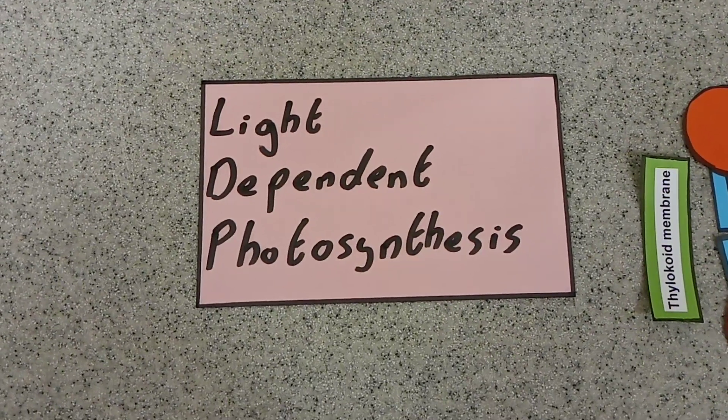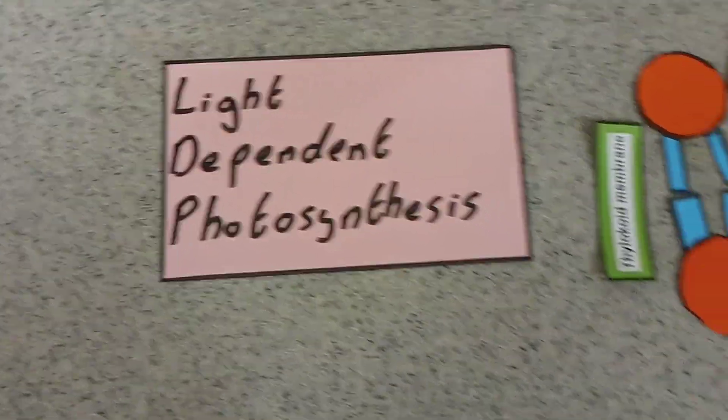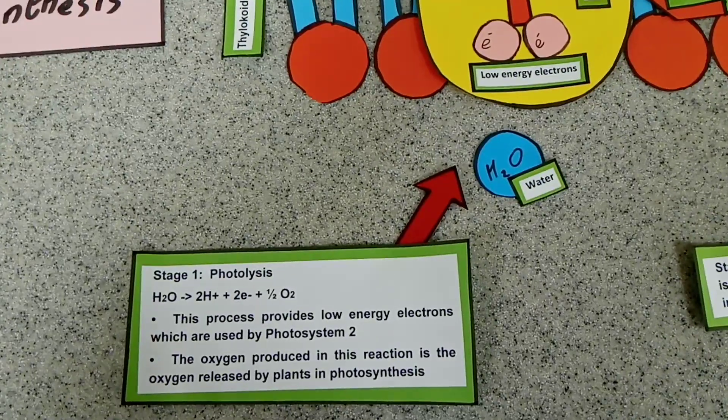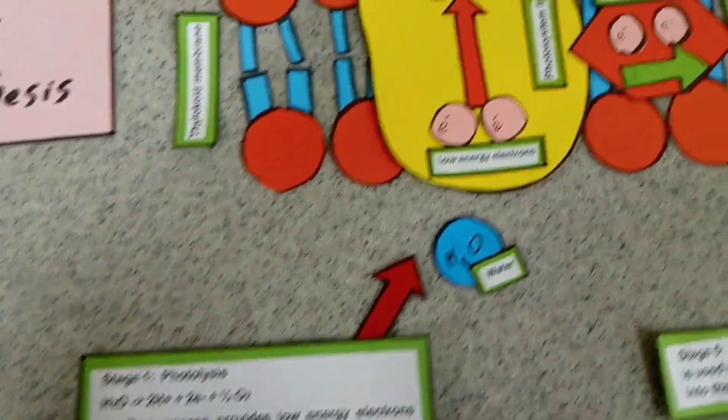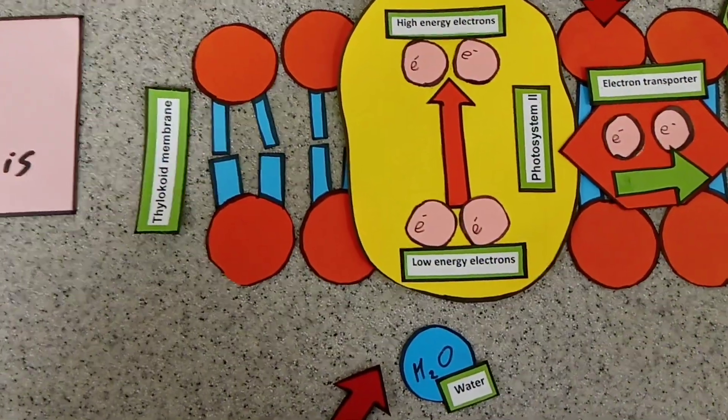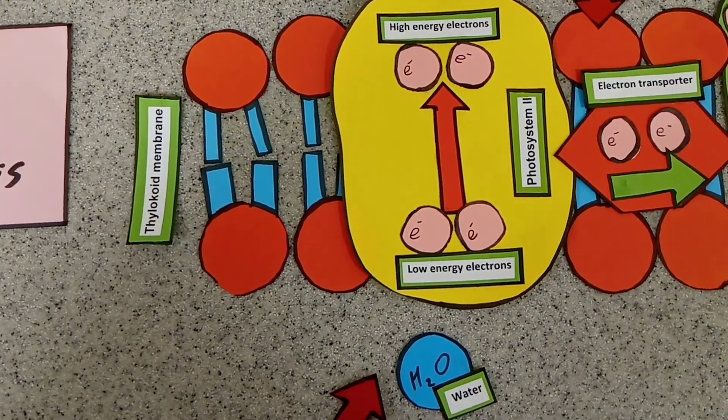One thing that you'll need to know about for A-level biology is light-dependent photosynthesis. It starts off with photolysis of water, which releases or donates two electrons to photosystem 2.